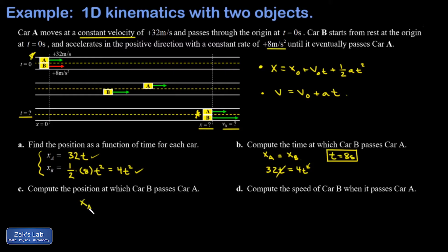So if I look at the position of car A when t is eight seconds, I get 32 times eight, and that's 256 meters to the right of the origin. When I look at car B, I'd better get the same answer, and that's also 256 meters to the right of the origin. So we verified these two cars really are in the same place when t is equal to eight seconds. That's good.